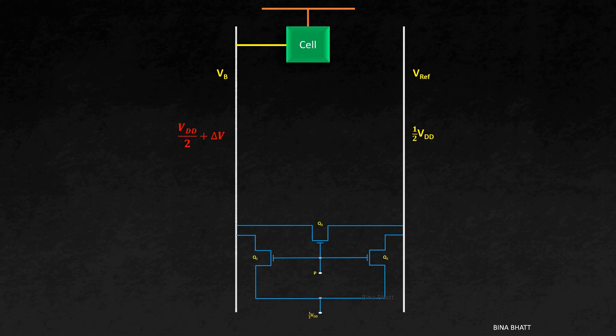We've also calculated its value in second step. After the charge sharing process, the sense amplifier is switched on by applying the enable signal. Now on one side, we have VDD by 2 plus delta V. And on the other side, we have VDD by 2, which means metastable state is disturbed. And this causes the inverters to move to a stable state.